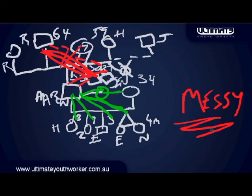The best way to do a genogram is on a big piece of butcher's paper — that's always the best way to go, it gets all of this out of the way and then it's not so messy. But mess is good, because life is messy, and it shows us all of the areas that are messy, which leads us to be able to help our people get through the things that are going on. That's the end of this video — I hope it's been good for you.